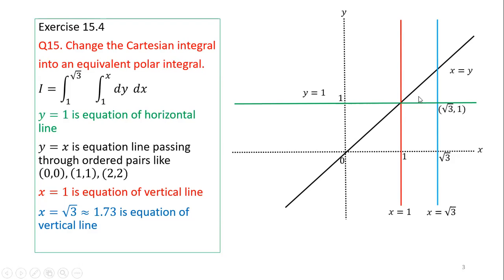We will highlight the triangular region. The corner points are: (√3, 1), (1, 1), and (√3, √3). The point (√3, 1) has x = √3 and y = 1. The point (1, 1) has x = 1 and y = 1. The point (√3, √3) has x = √3, and it is the intersection of the line y = x, so the second coordinate is also √3.